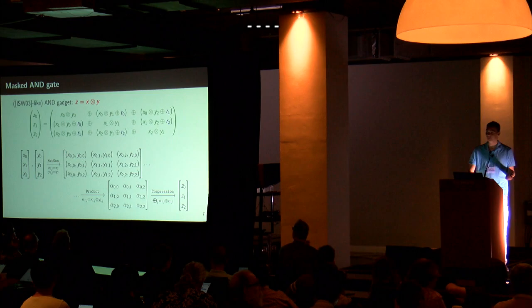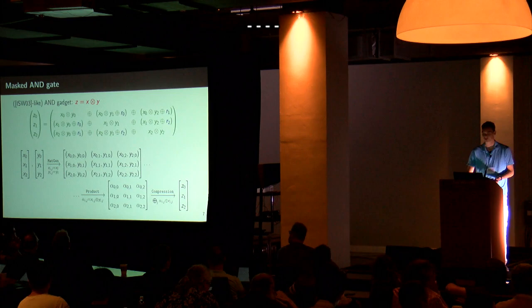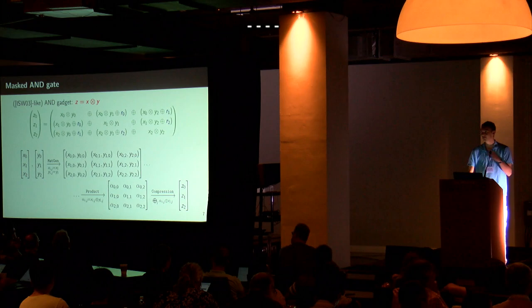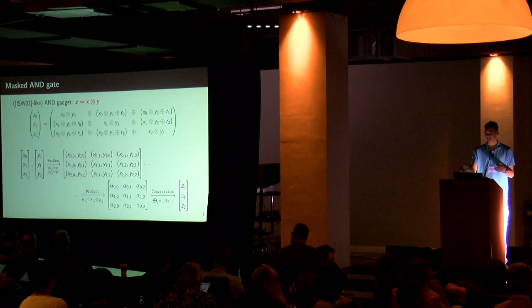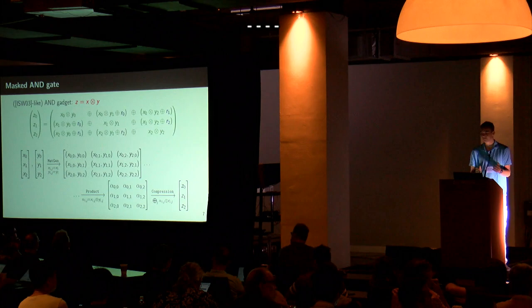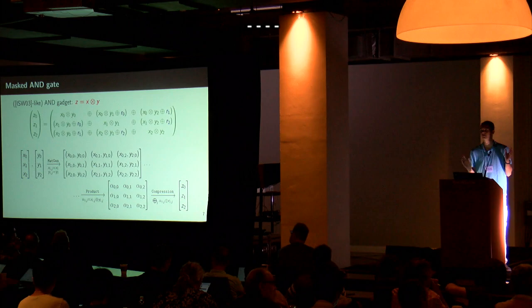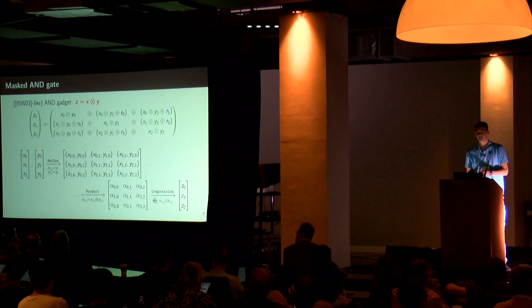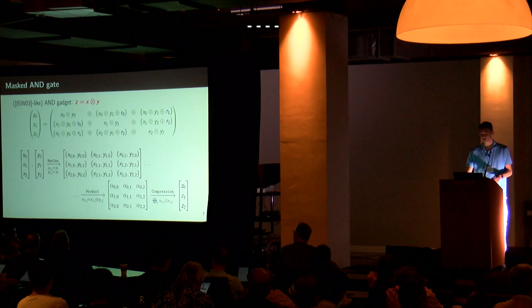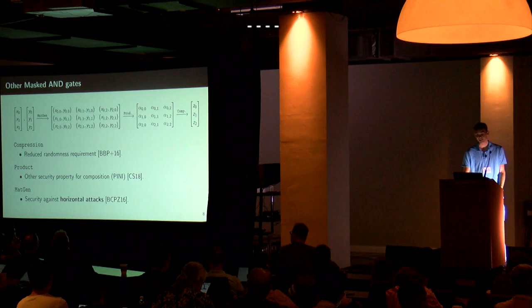As an example of a masked gadget we'll take the AND gate, since it's the most complex — linear functions are easy to implement. In ISW, you take shares, multiply them to build a big matrix of partial products. In this example with nine shares, you want to compress that to three output shares, absorbing them and adding randomness for security. We can analyze this as a three-stage process: generate a matrix of pairs of shares, make a product, then compress. This analysis shows how to change each of those three stages to build alternative multiplication gadgets.